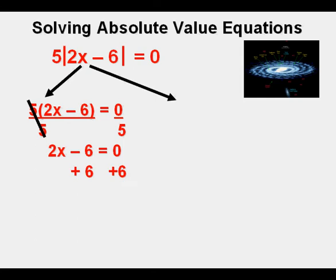We get rid of the negative 6 by adding 6 to both sides and cancel on the left. We bring down what's left. That would be 2x equals 6. We finish solving by dividing both sides by 2 and cancel on the left. And bring down the final result, x equals 3.